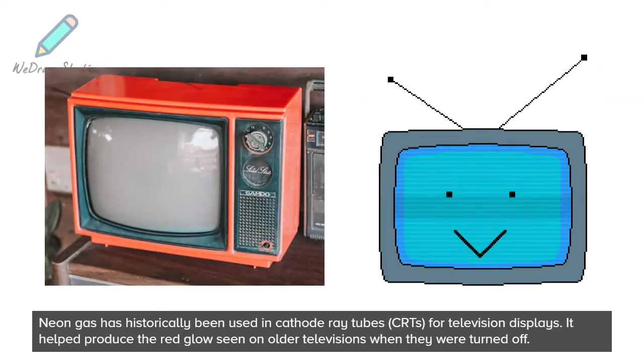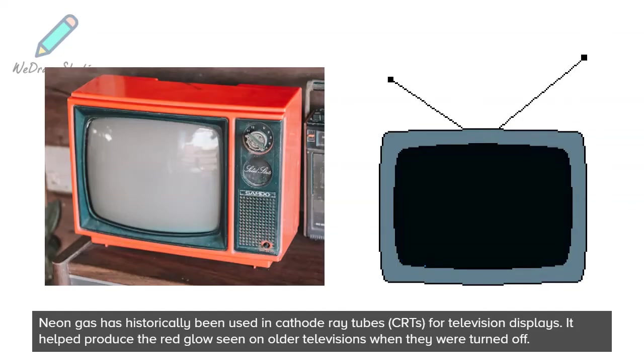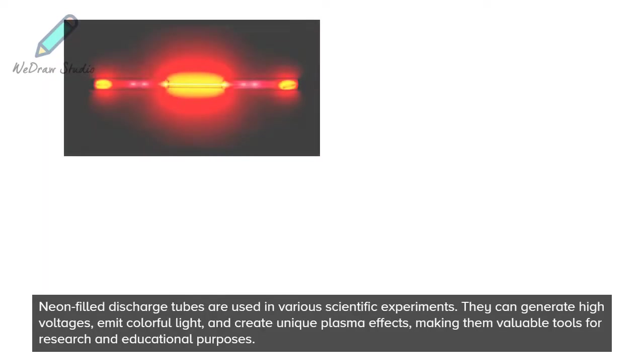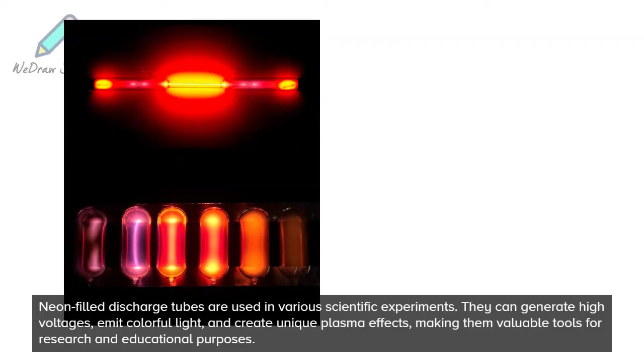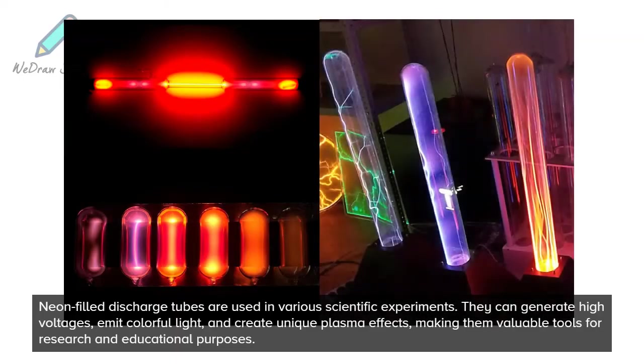It helped produce the red glow seen on older televisions when they were turned off. Neon-filled discharge tubes are used in various scientific experiments. They can generate high voltages, emit colorful light, and create unique plasma effects, making them valuable tools for research and educational purposes.